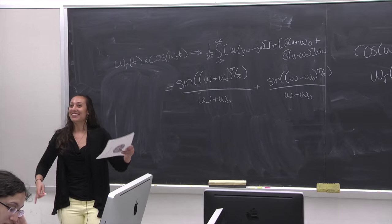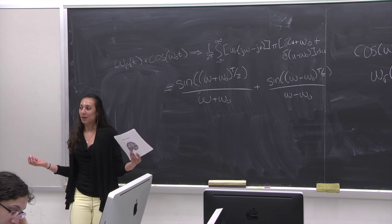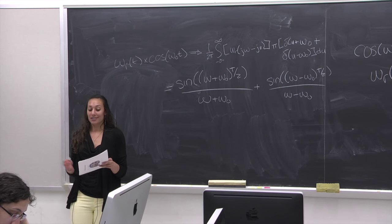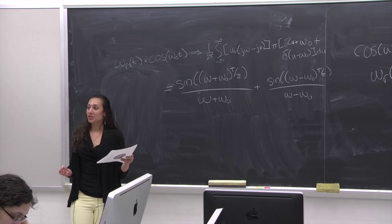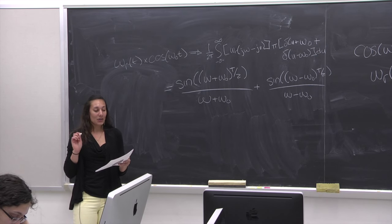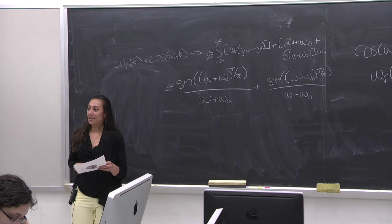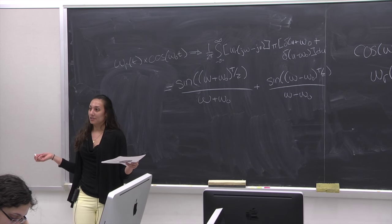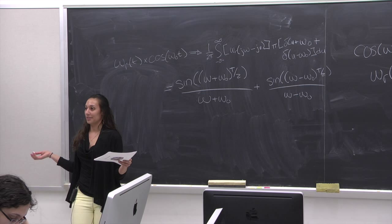One way to reduce noise mathematically is to average. We have two options: average in the time domain — take multiple epochs — which is fine except if you have a non-stationary or dynamic signal. Or you can average in the frequency domain, but the problem is you're losing resolution. So this brings us to the idea of a multi-taper solution.